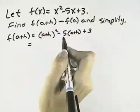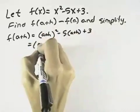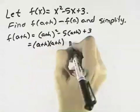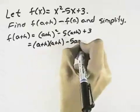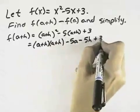Multiplying that out, we'll have a plus h times itself, minus 5a minus 5h plus 3.